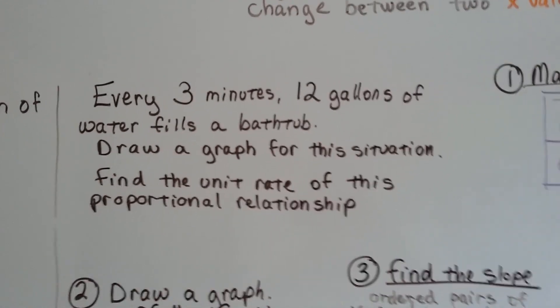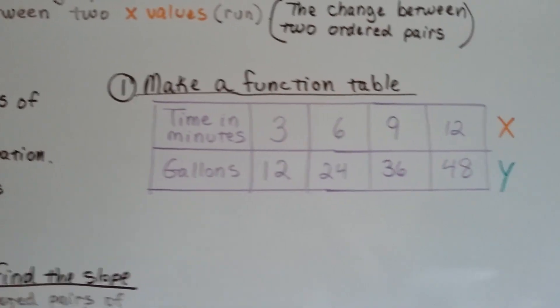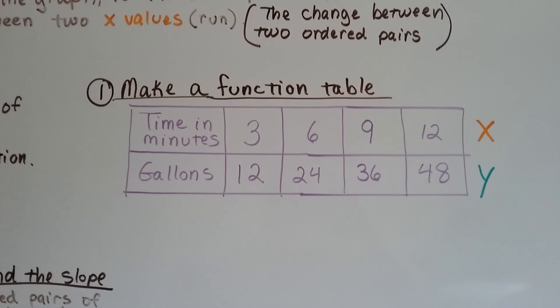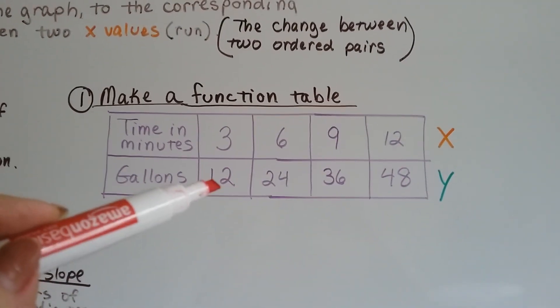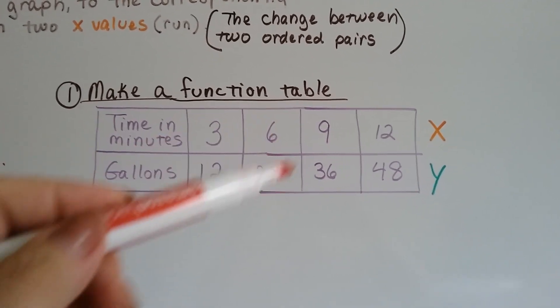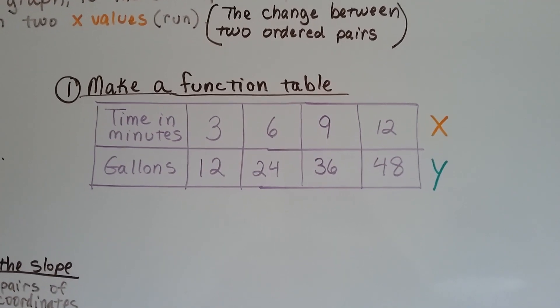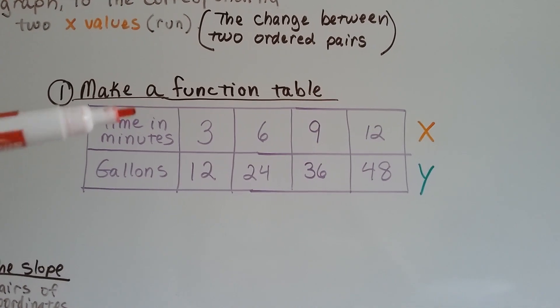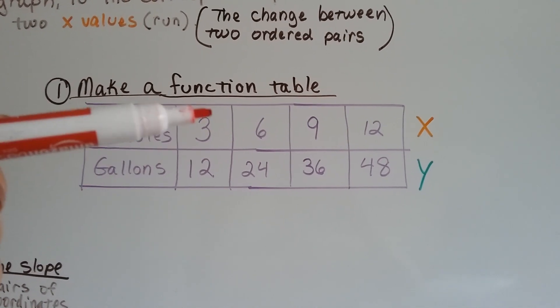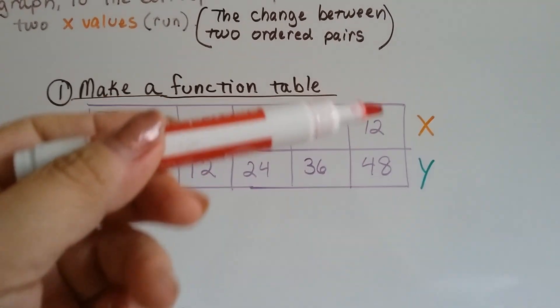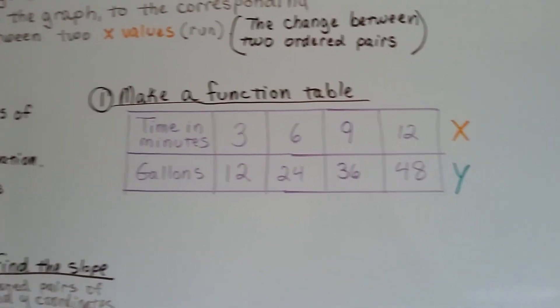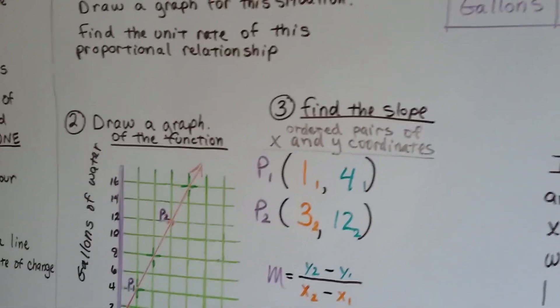So the first thing we're going to do is make a function table. So we know it has three minutes and twelve gallons, because that's what it told us. So we make a function table that shows that proportional relationship. The time in minutes is x, and the gallons is y, so if three is twelve, six will be twenty-four, nine will be thirty-six, and twelve will be forty-eight.